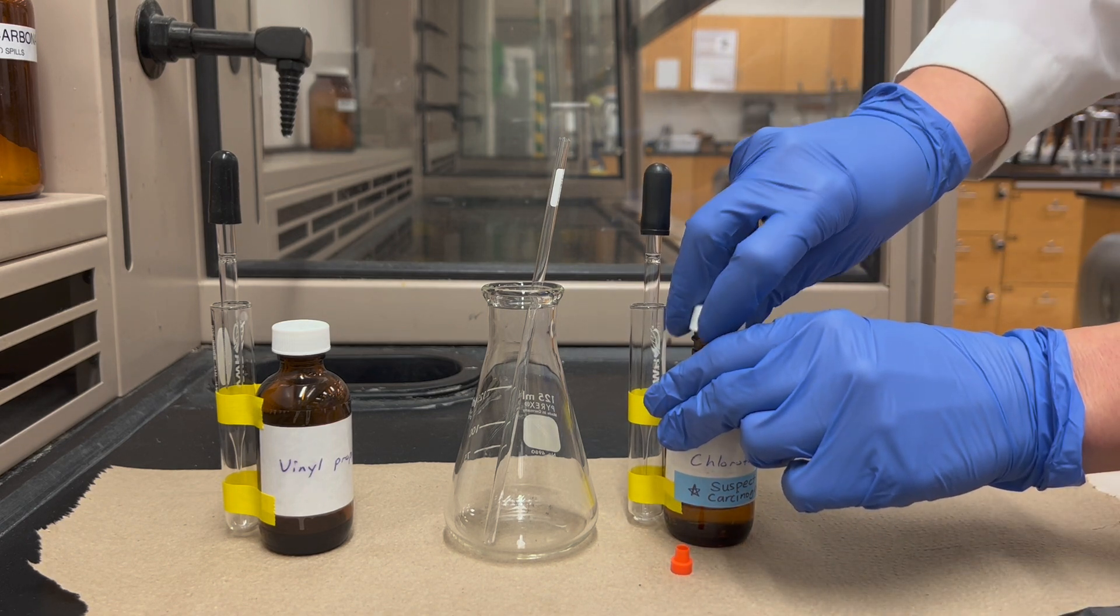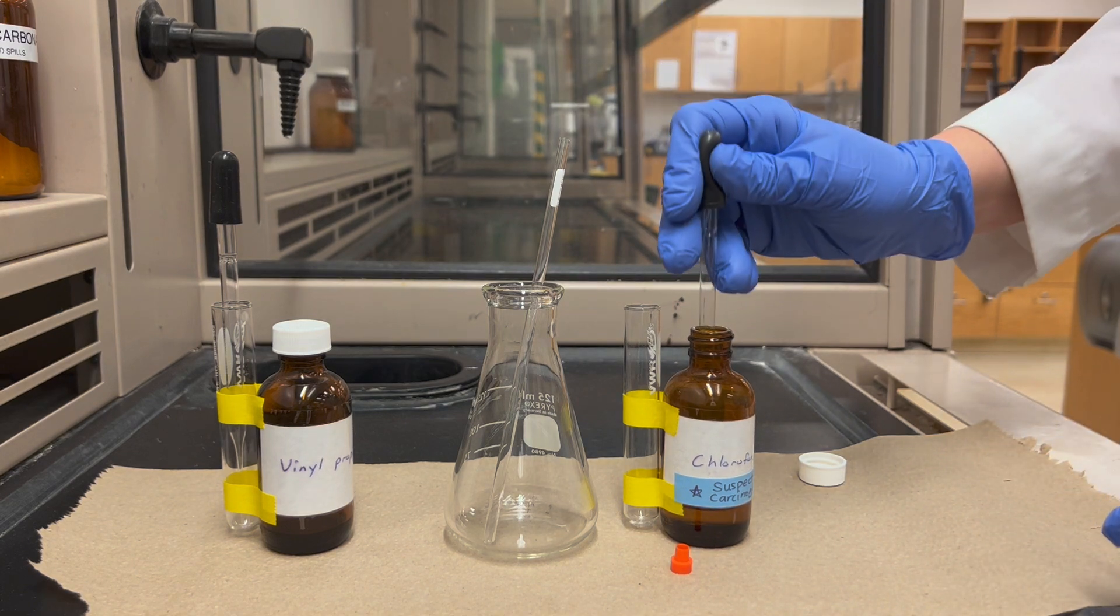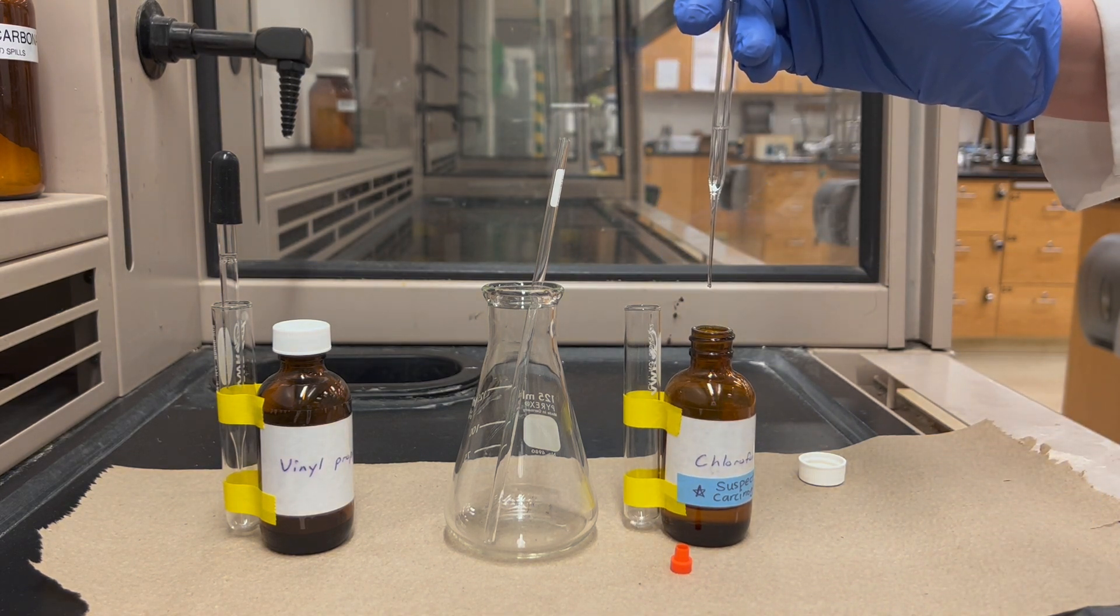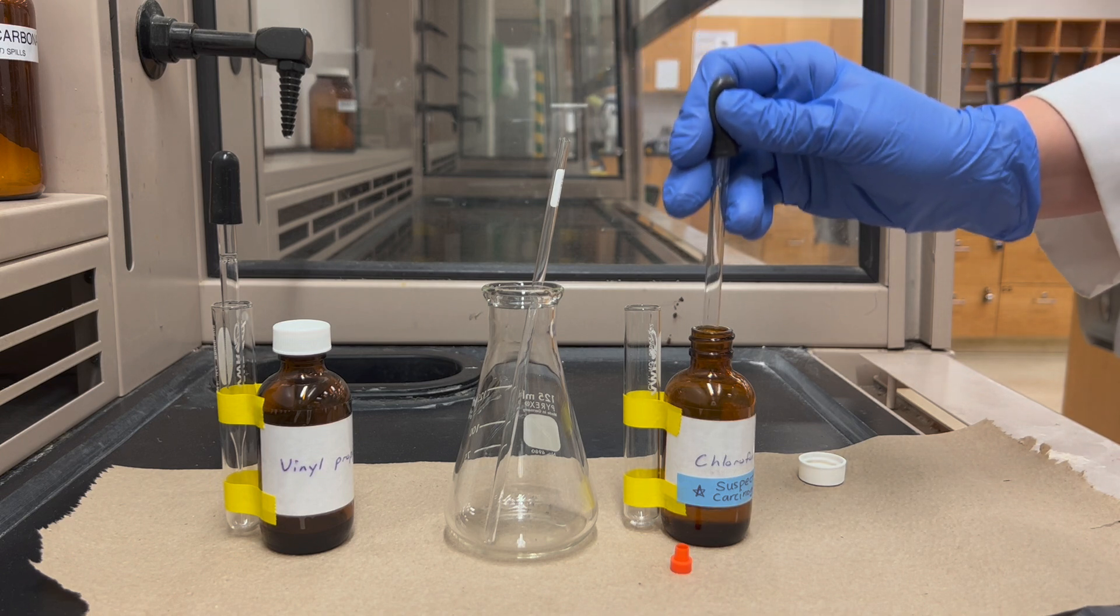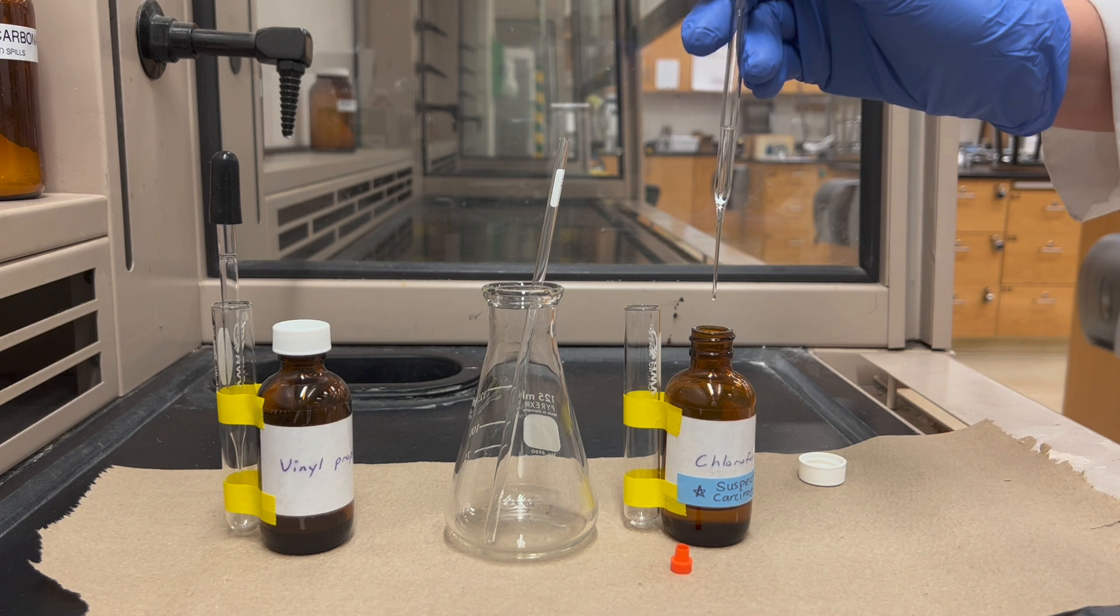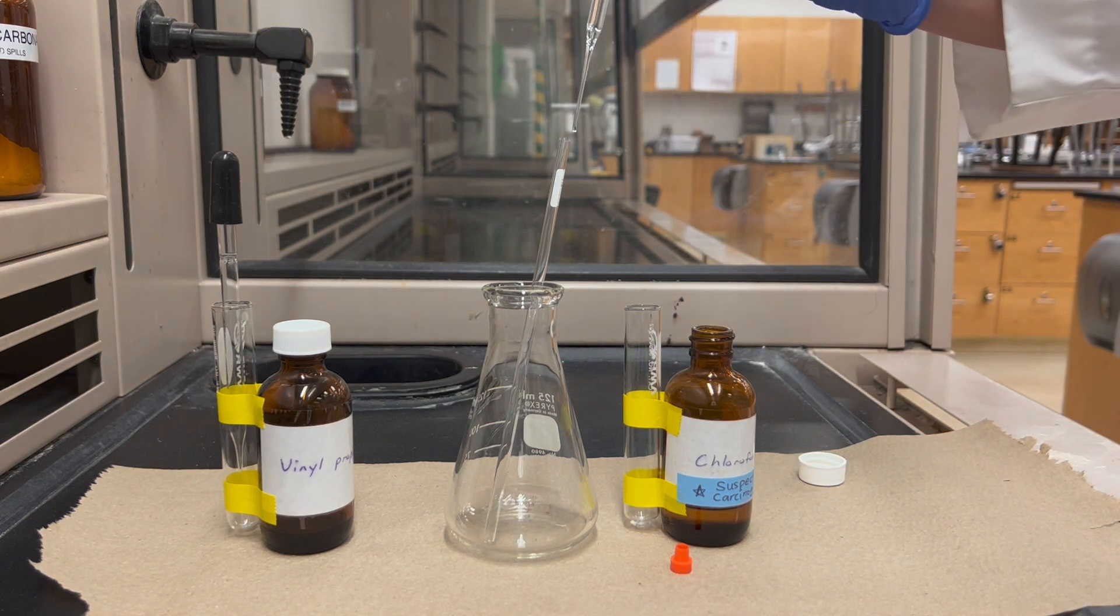Deuterochloroform also has a tendency to drip out of the pipette. If you notice it's dripping out on its own even without pushing on the bulb, one way to fix this is to withdraw and expunge the solvent a few times. By doing that you'll saturate the headspace in the pipette with vapors and it won't drip anymore.